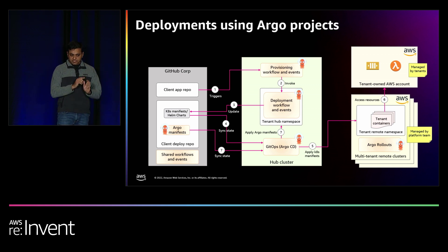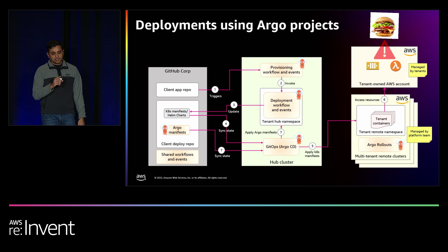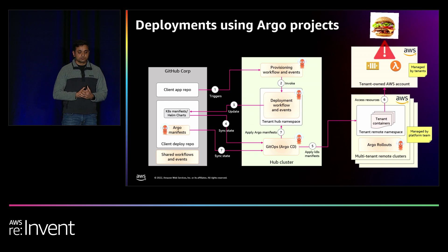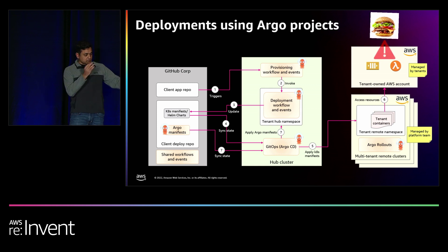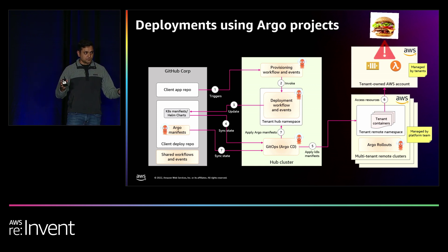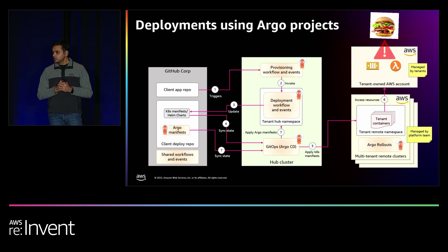Everything seems to be hunky-dory, but there's a problem. The problem is that we have these resources pre-provisioned in the tenant-owned AWS account. In terms of the analogy we talked about earlier, you're only getting the burger — you're not getting the fries and the soda. So let's see how we can solve it using Argo and Crossplane in tandem.